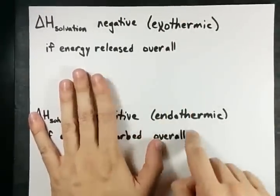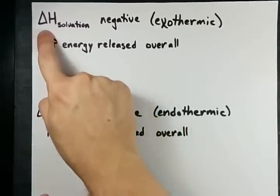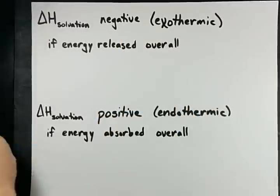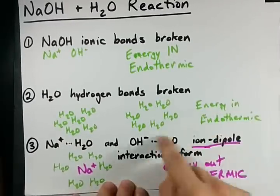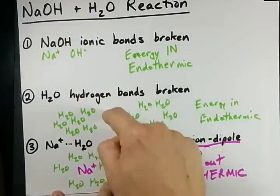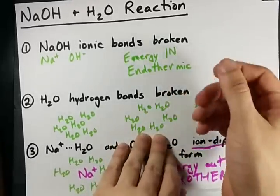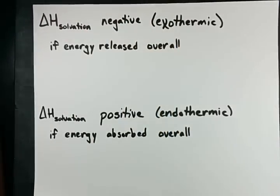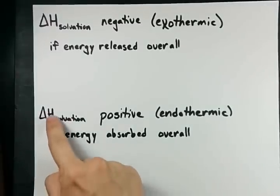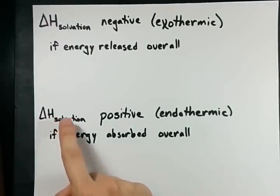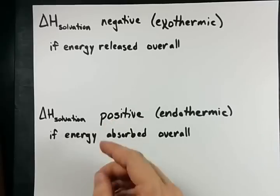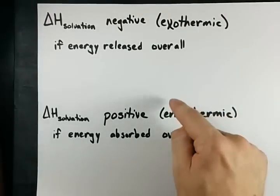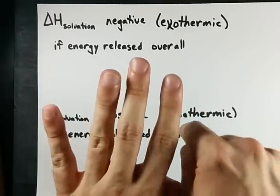If you're into exothermic endothermic, we say that the enthalpy of solvation is negative if energy is released overall. That is, step three is bigger than steps one and two put together in terms of amount of energy. That makes it an exothermic dissolving process. The exact opposite, when delta H solvation is positive, more energy needed to be put in than you got out. So overall, it's an endothermic process, and the temperature of your water would go down.